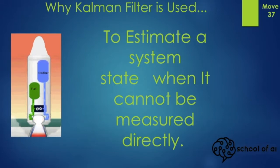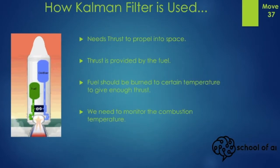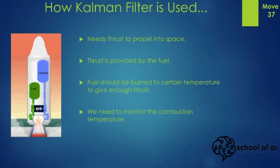We cannot certainly go into a combustion system and see how hot it is. A spacecraft needs some thrust to propel itself into space. The thrust is provided by fuel, which should be burned inside the combustion chamber to a certain temperature to give enough thrust. We need to monitor this combustion temperature to keep the thrust at the level the engine needs to propel.